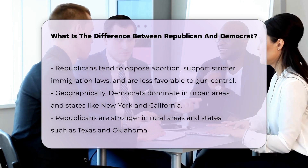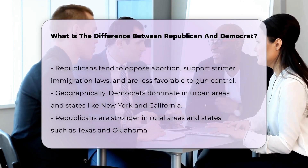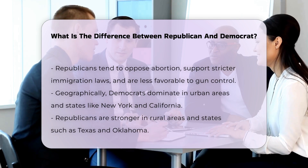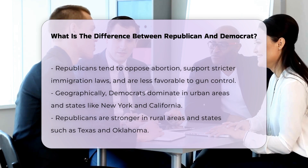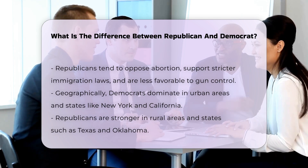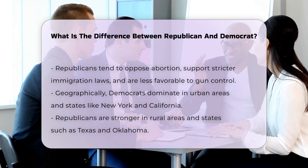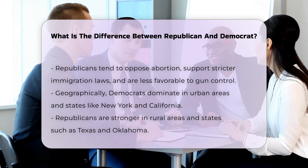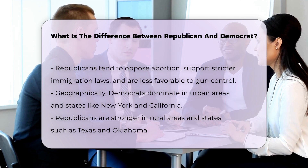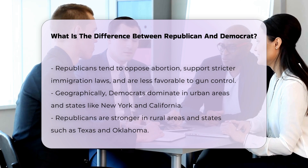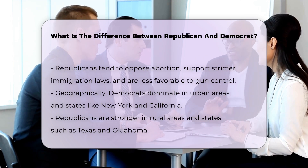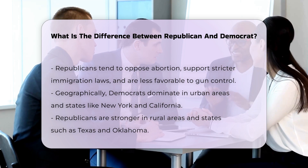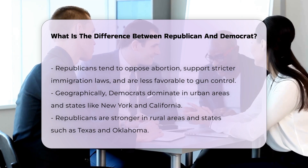Social issues. Democrats generally support greater freedoms such as abortion rights and LGBTQ+ rights. They also advocate for stricter gun laws and more lenient immigration policies. Republicans, on the other hand, often align with traditional values, opposing abortion and supporting stricter immigration laws. They also tend to be less favorable to stricter gun laws.